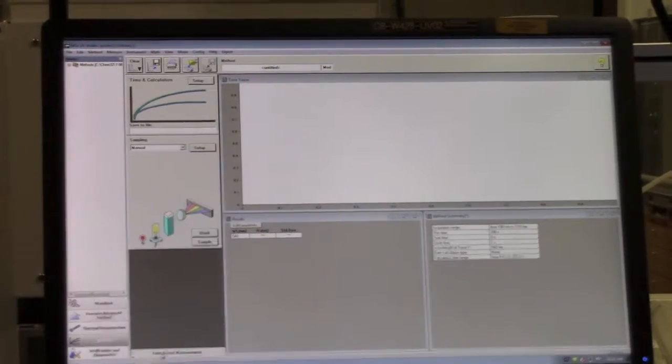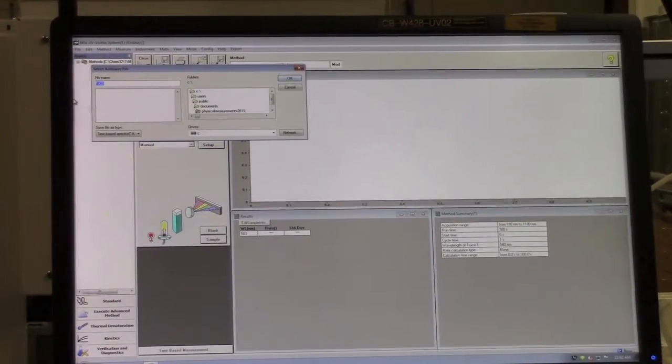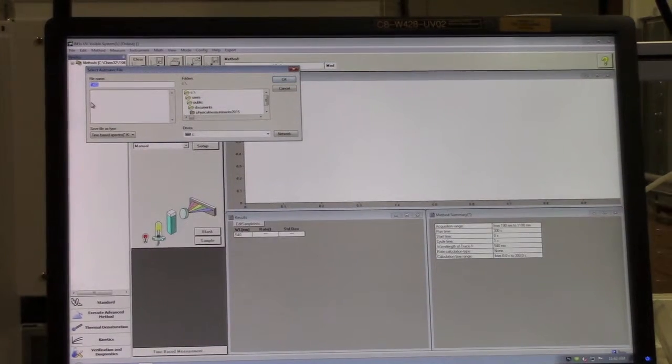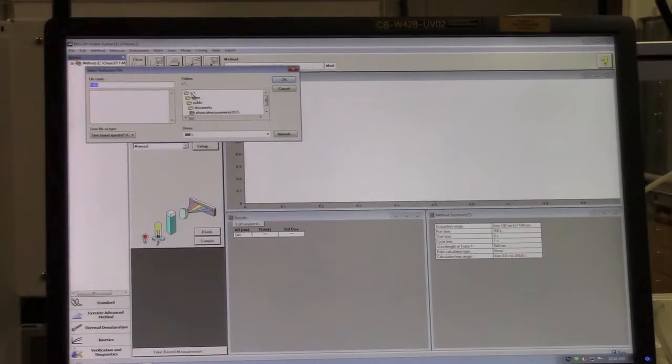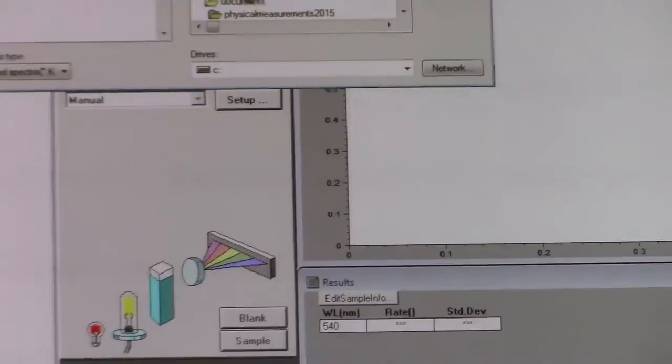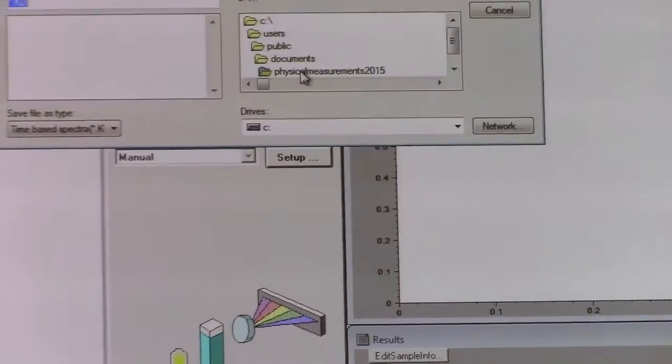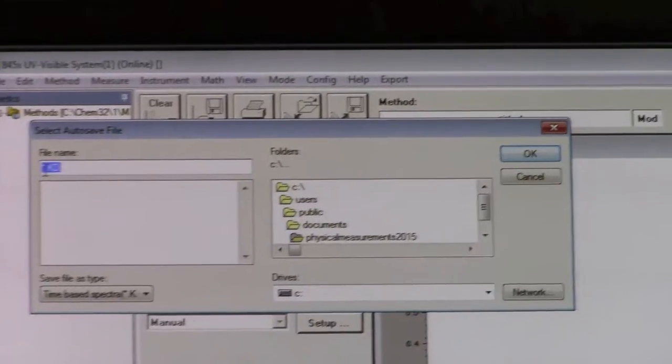Click on Time-Based Measurement and you'll be prompted to create an autosave file. Name this something appropriate to the experiment. Store it in C:\Users\Public\Documents, for example Physical Measurements 2015, and name it something appropriate.